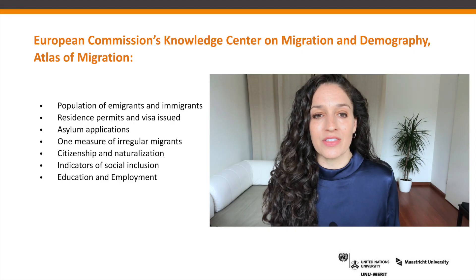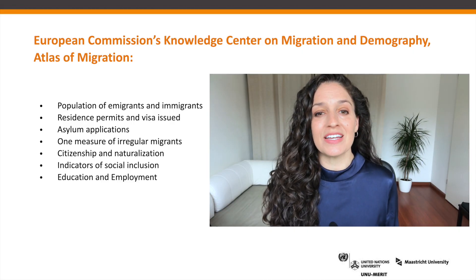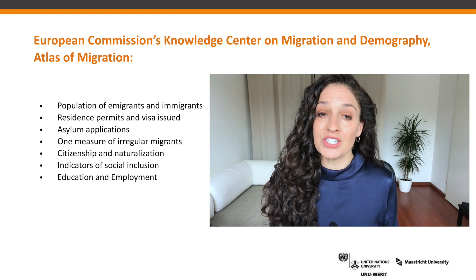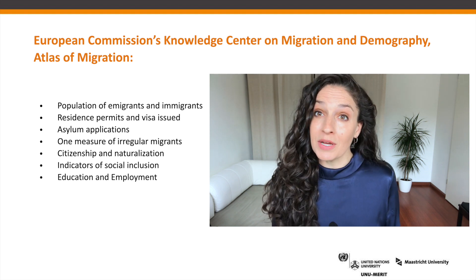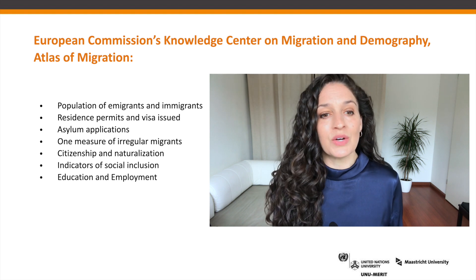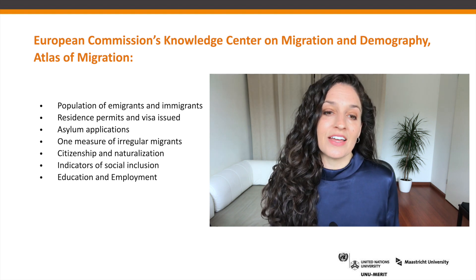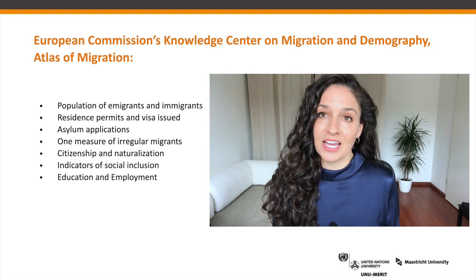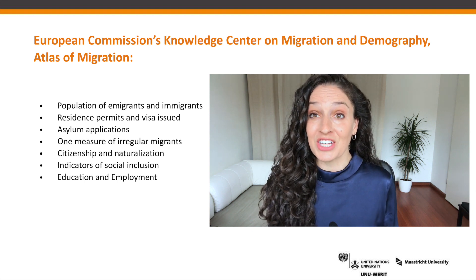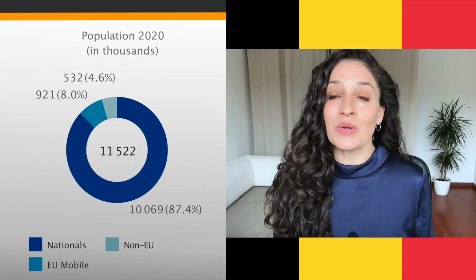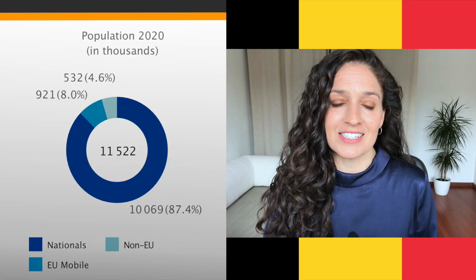I will look at the population of immigrants in the country, the residence permits and visas issued, asylum applications, and one measure of irregular migration. We'll also look at citizenship and naturalization, and some indicators of social inclusion, as well as education and employment. So let's jump right in with some of the population statistics.